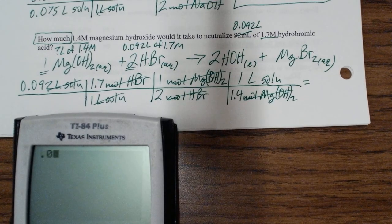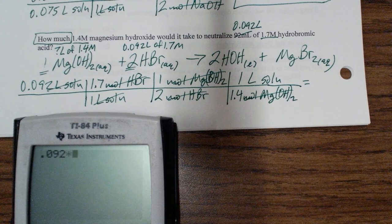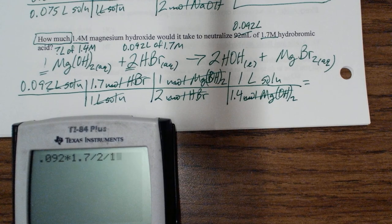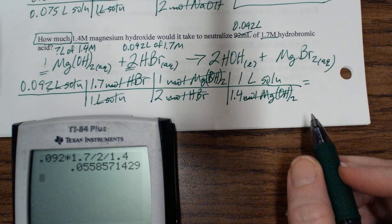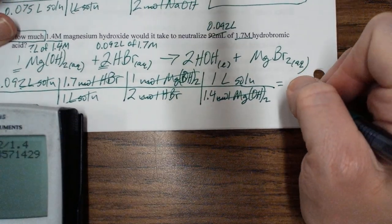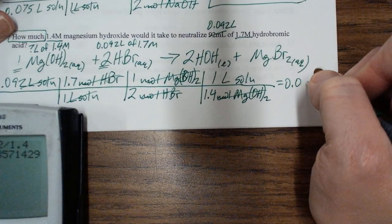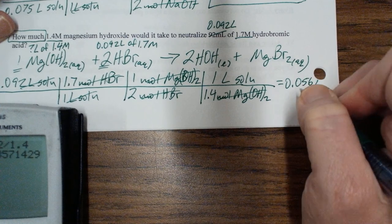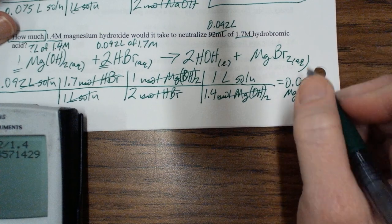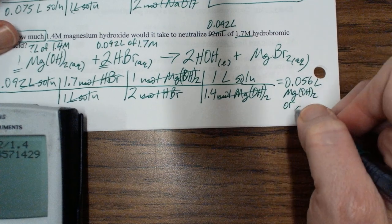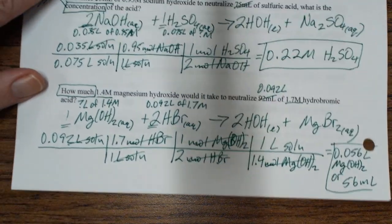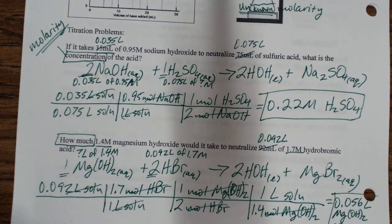So 0.092 times 1.7 divided by 2 divided by 1.4. And so I have two sig figs yet again with everything. That would mean that I have 0.056 liters of my basic solution, or I could say that's 56 milliliters. Depends on what I'm asking for in the question. And that's titration. Have a great day.